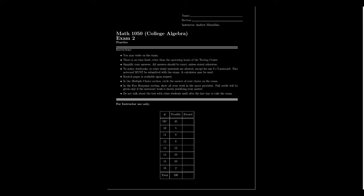Just like Exam 1, this exam will have two types of questions. There'll be nine multiple-choice questions worth five points each, and then there will be six free response questions ranging from five to twelve points each. For semester-specific details like time, place, and manner, refer to Canvas — you won't find that information in this video. The basic structure and resources are essentially identical to Exam 1.